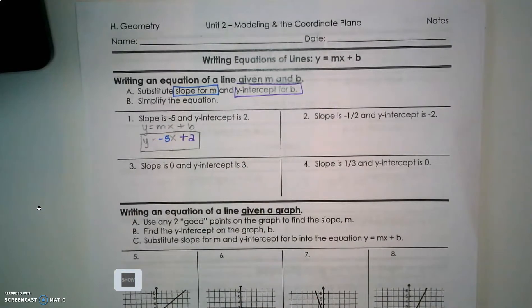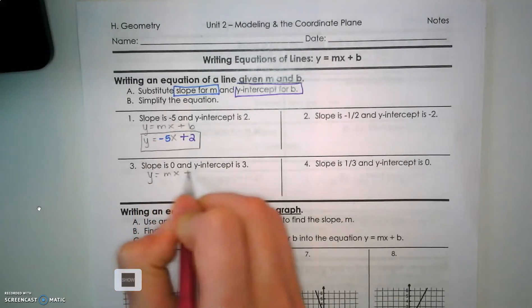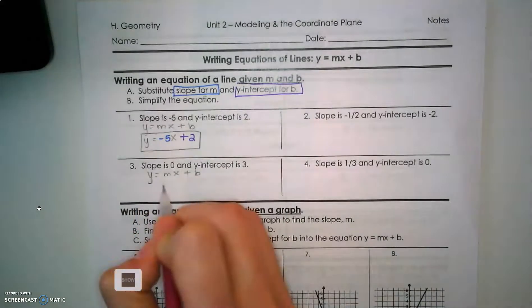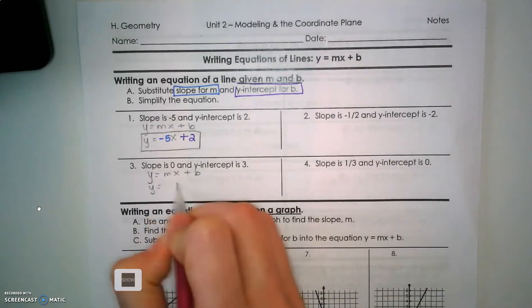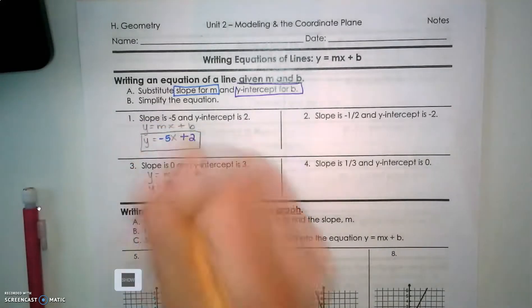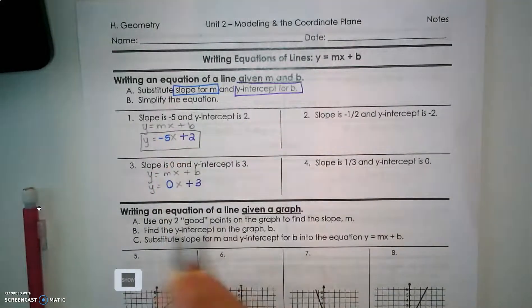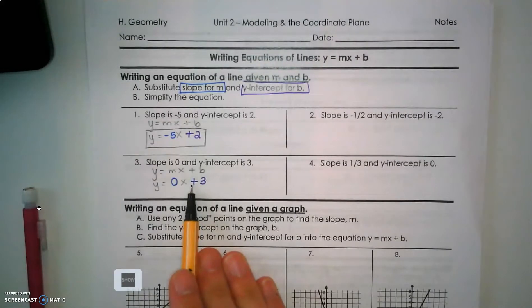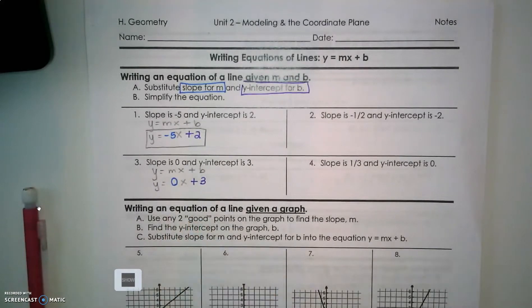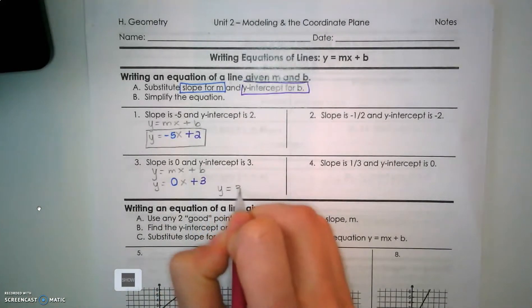Again we have y equals mx plus b. My slope is 0, so I substitute that in, and my y-intercept is 3, giving plus 3. Well, anything times 0 is 0 — that's our zero product property — so that term isn't necessary. This is a case where we simplify our equation and write y equals 3. A slope of 0 gives a horizontal line that crosses at y equals 3.